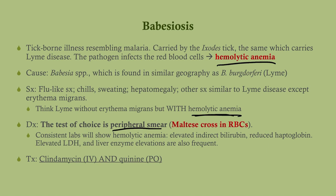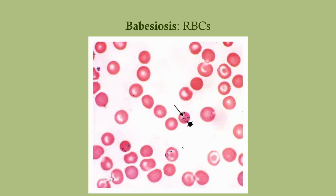Consistent lab findings include increased indirect bilirubin, reduced haptoglobin, and elevated LDH. Liver enzymes can also be elevated. Treatment is clindamycin and quinine — quinine is also used for malaria, and malaria similarly affects red blood cells, which is a helpful way to remember it.